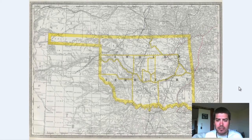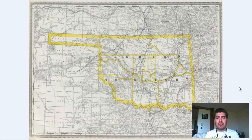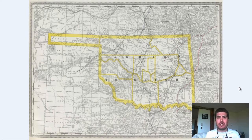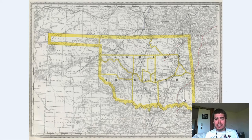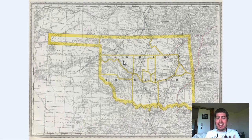Hey everyone, Adam Shaw here from Bravera Media Company. Today we've got another vintage map for you guys. It is a map of Oklahoma that was originally produced in 1889. As you can see, it's not labeled Oklahoma — back in 1889 it was called Indian Territory.